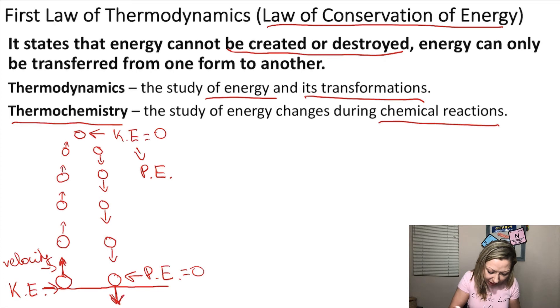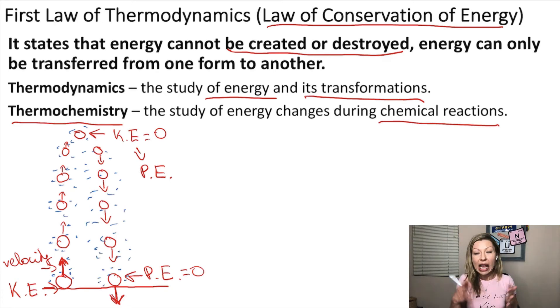But what about the air molecules and friction? So imagine that as my ball goes upwards, it actually bumps into all these air molecules, right? There are a bunch of air molecules. So basically what happens is that as my ball is traveling, it hits all those air molecules and transfers some of its energy into the air in a form of heat.